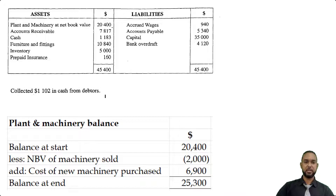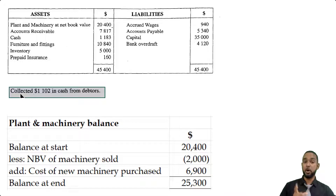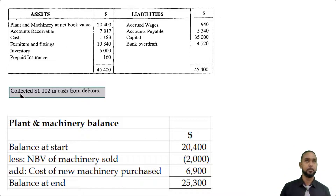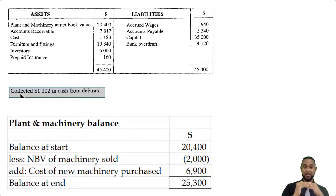They're telling us that we collected $1,102 in cash from debtors. What's happening here is cash is going up and debtors is going down. If you collected cash, cash goes up. Where did it come from? Your debtors - when your debtors paid you back, the amount they owe you went down.